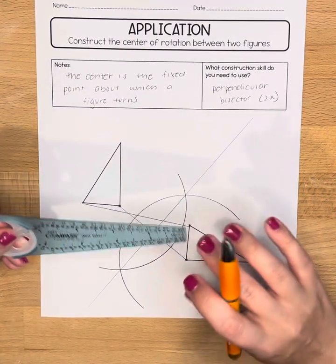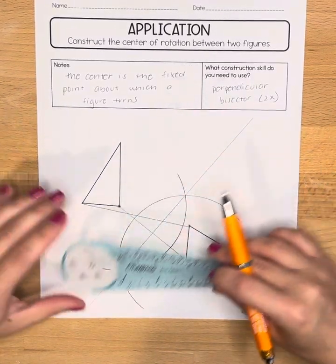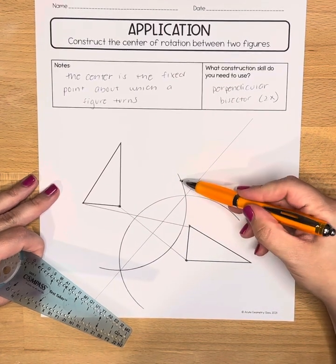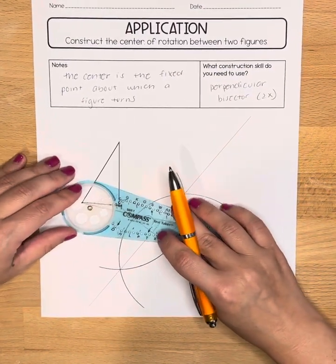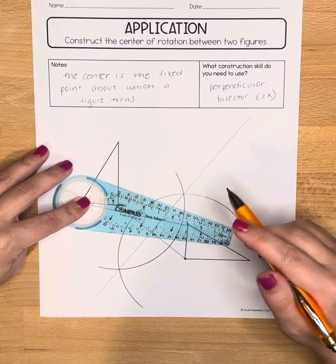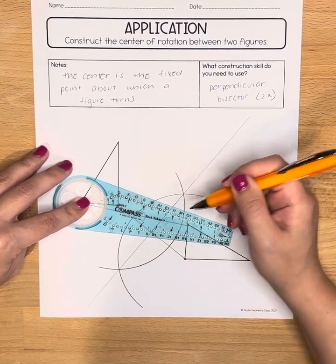When we're doing this, we want to be really careful about what arcs we've already done. So remember, this is our old arc, this is our old arc, and we're just creating two new ones. So repeat that process. We're doing the perpendicular bisector construction again.